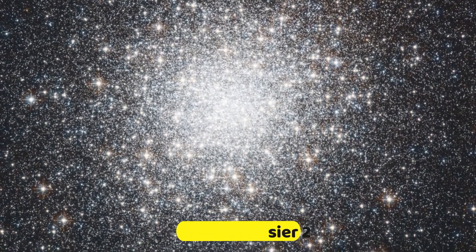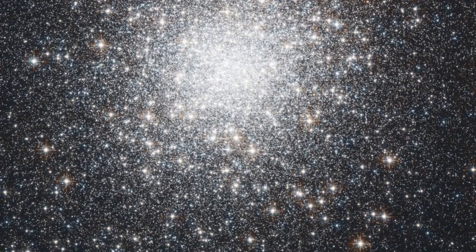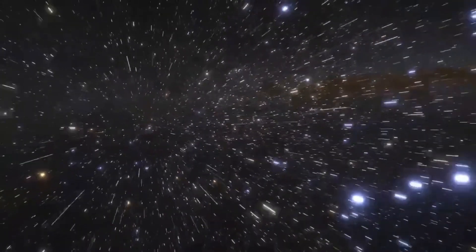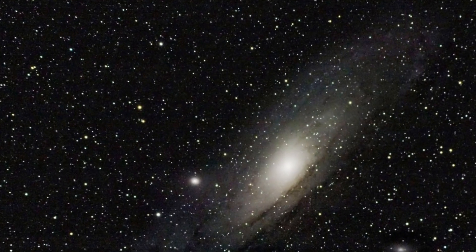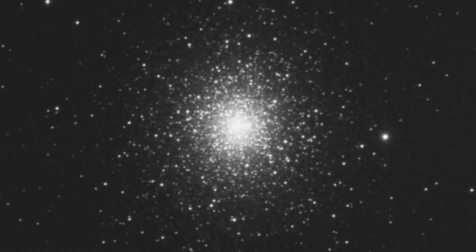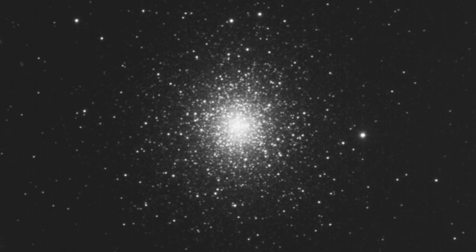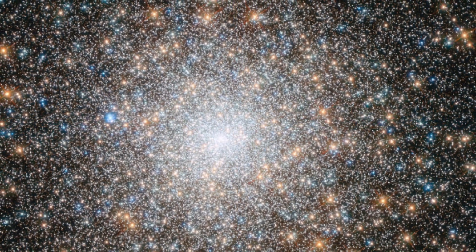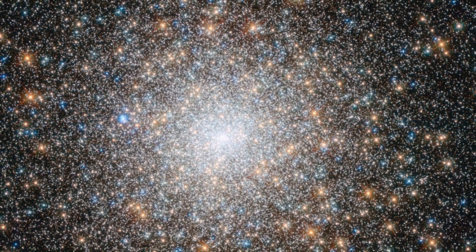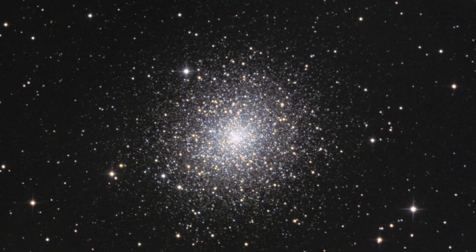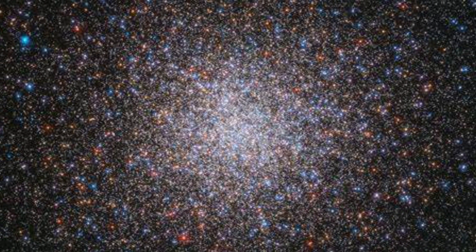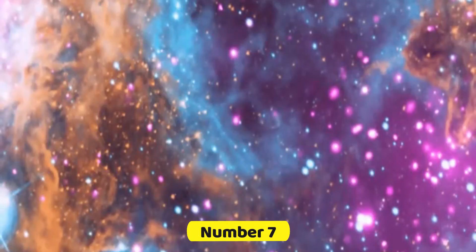Number 8. Majestic Messier 2. Prepare to be awestruck by Messier 2, the grand cosmic gathering in Aquarius. This spherical wonder, a globular cluster with 150,000 stars, boasts a staggering 13 billion years of age. Shimmering streams of stars reach into space from its center, creating a luminous spectacle that even the naked eye can marvel at under the perfect sky conditions.